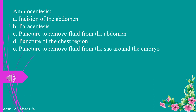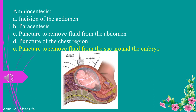Amniocentesis. a. incision of the abdomen. b. paracentesis. c. puncture to remove fluid from the abdomen. d. puncture of the chest region. e. puncture to remove fluid from the sac around the embryo. The answer is e. puncture to remove fluid from the sac around the embryo.